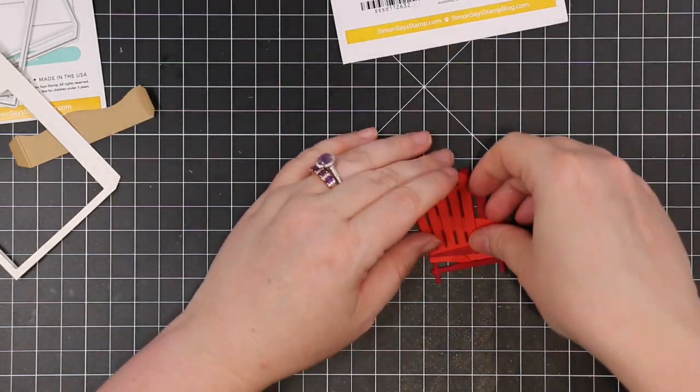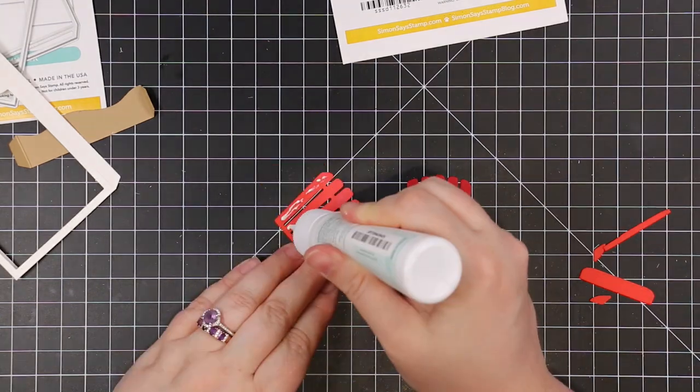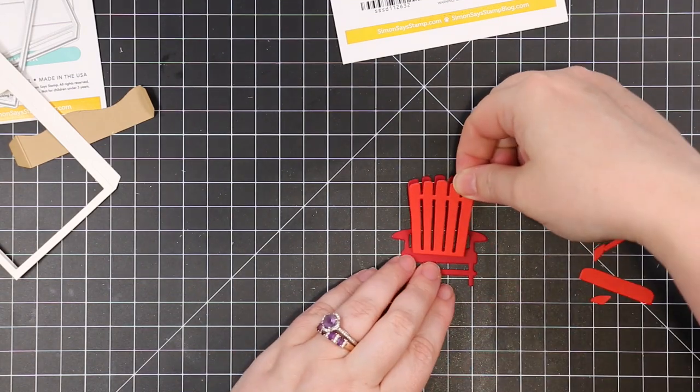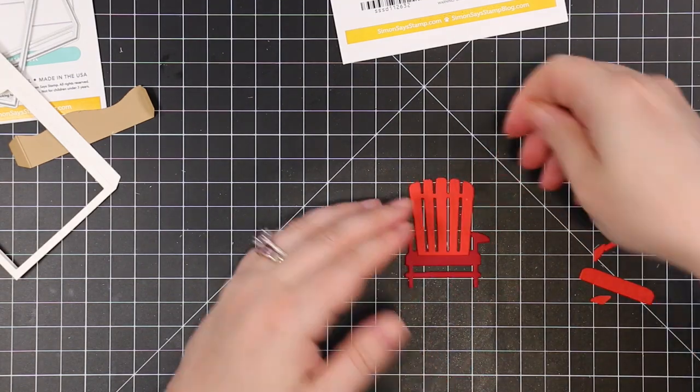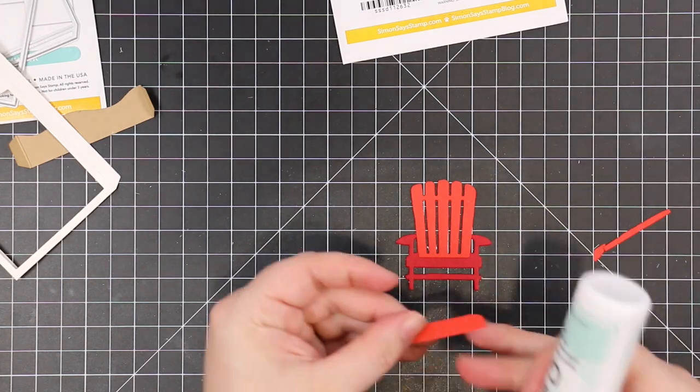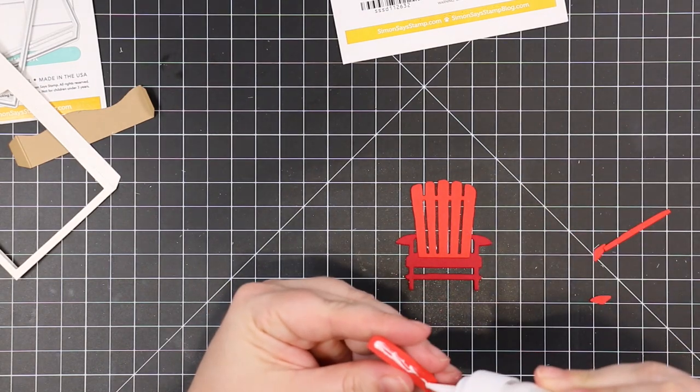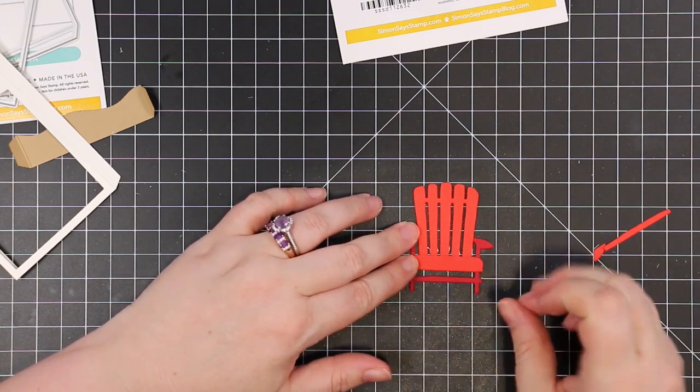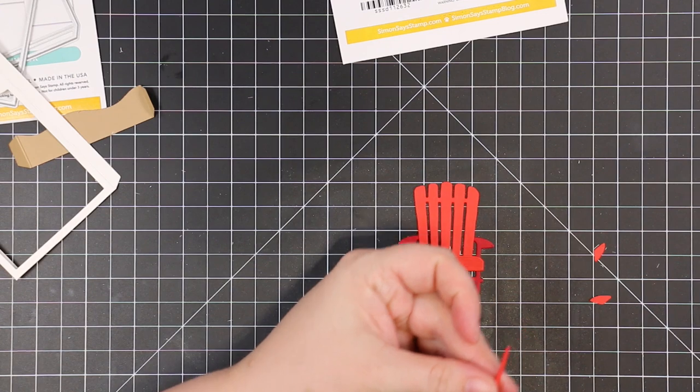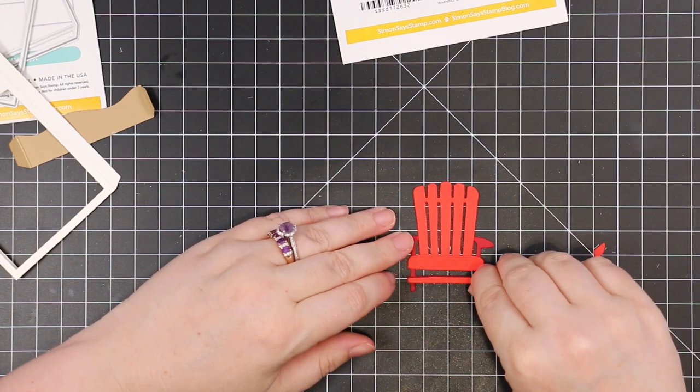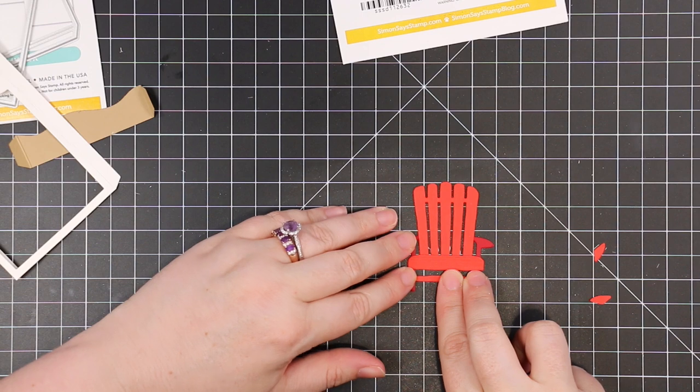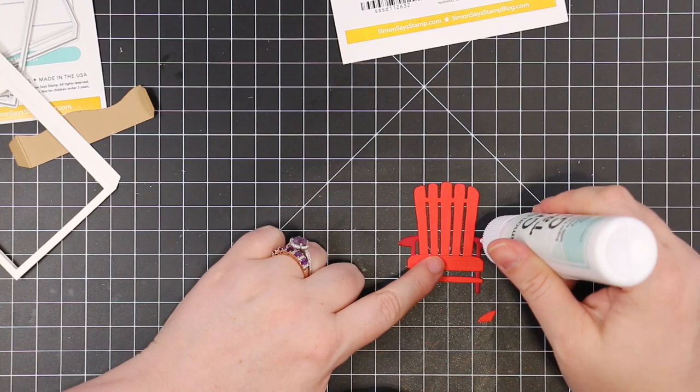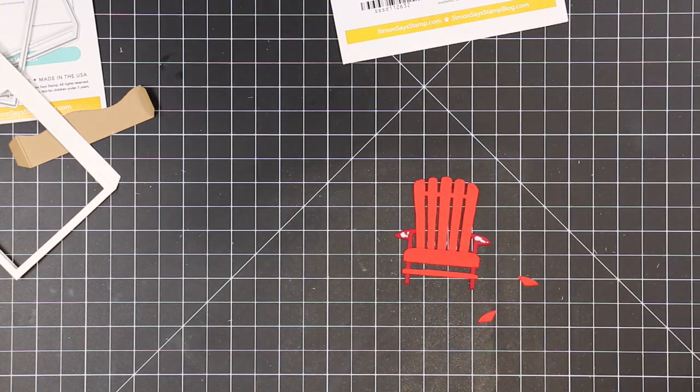To add to my scene, I have the Adirondack chair wafer die that just came out in Simon's Let's Chill release. It's so cute. I die cut the base from darker red cardstock, Simon's Schoolhouse Red cardstock. Then there's a second wafer die that die cuts the detail pieces that you layer on top that give it extra dimension. Those I die cut from Lipstick Red, just a lighter red.